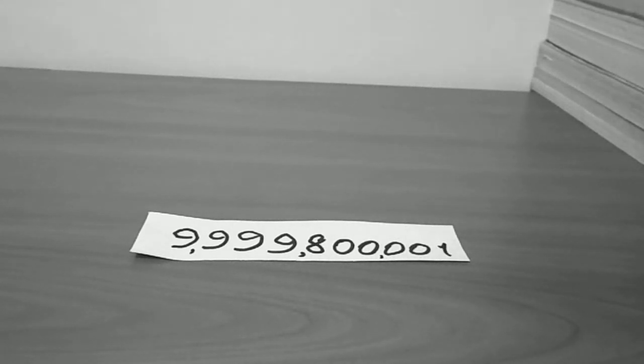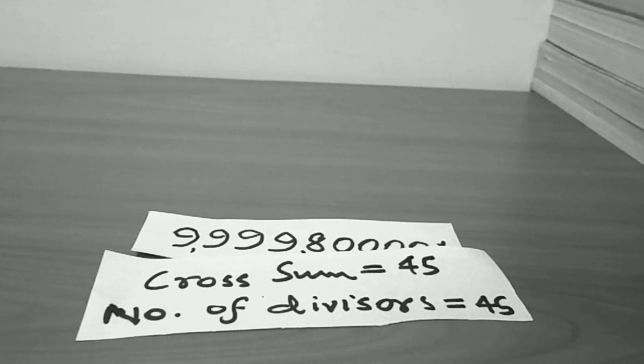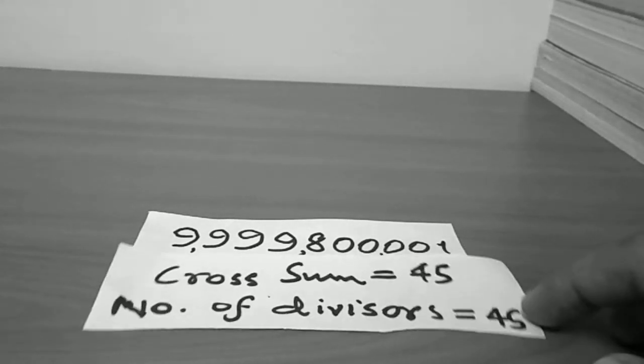As it's a prime number, the number of divisors is also 2. So I was wondering whether there are other such numbers in which the number of divisors as well as the cross sum or the digit sum of the number is also equal. So guess what? This number obeys the property.